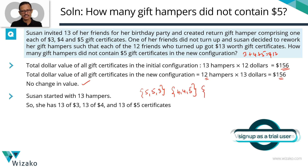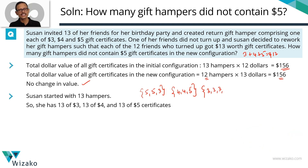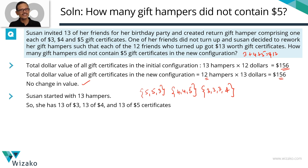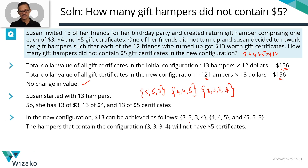Let's look at starting with $3: $3, $3, $3 gives $9; one more $3 gives $12 and again we'd need a $1 certificate which Susan doesn't have. So let's go with a $4 instead, giving $3, $3, $4 as the third variant. So these are all three possibilities for making $13 worth of gift hampers using $3, $4, and $5 certificates. She will make variants of all three.